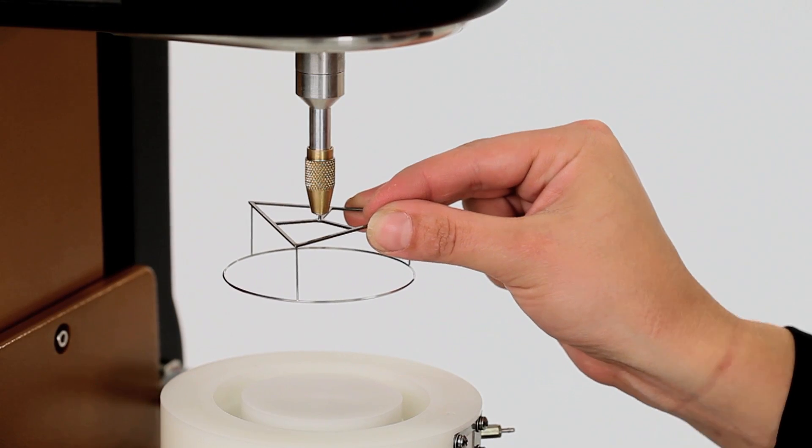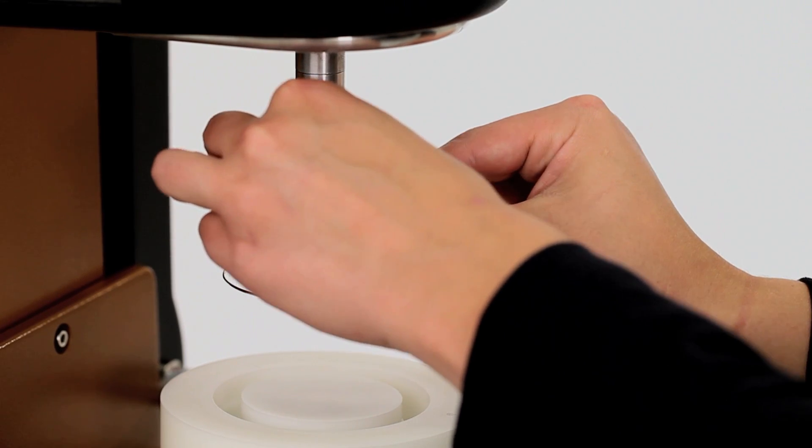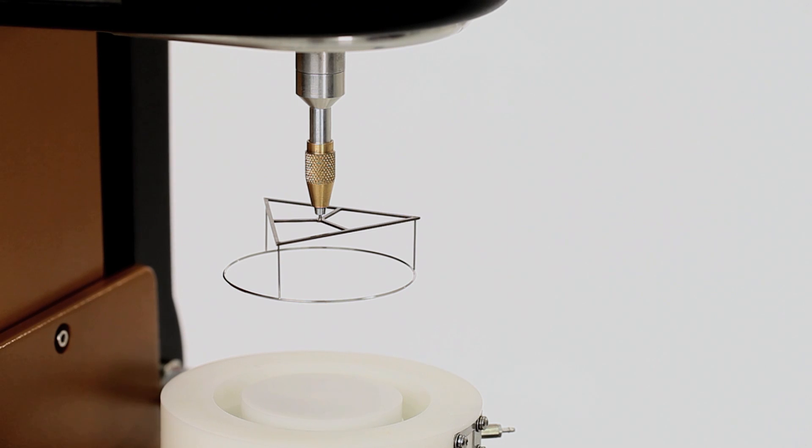Raise the rheometer head to the loading gap and insert the double wall ring into the holder. Ensure that the ring has been pushed all the way in and that the chuck is tightened so the ring does not slip.